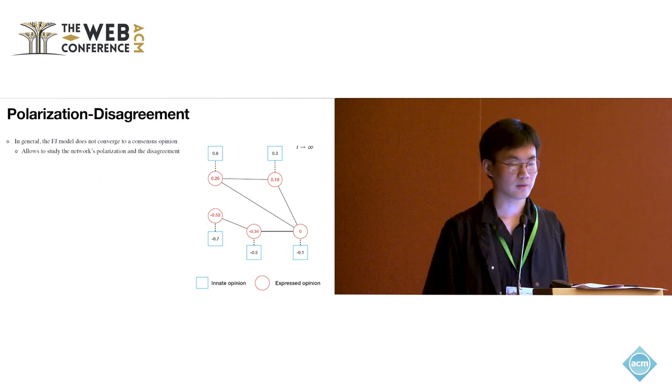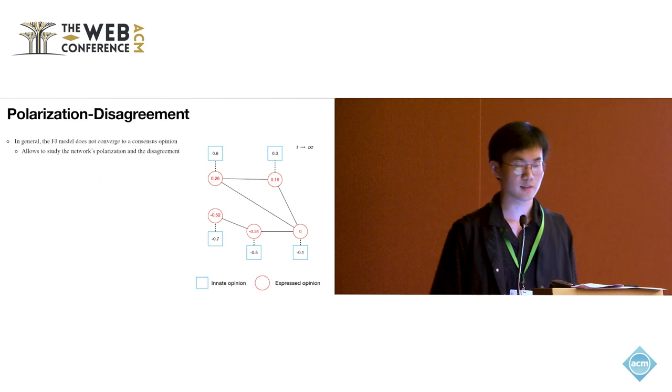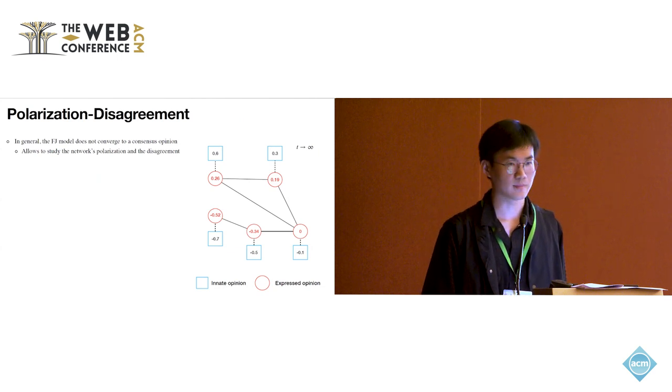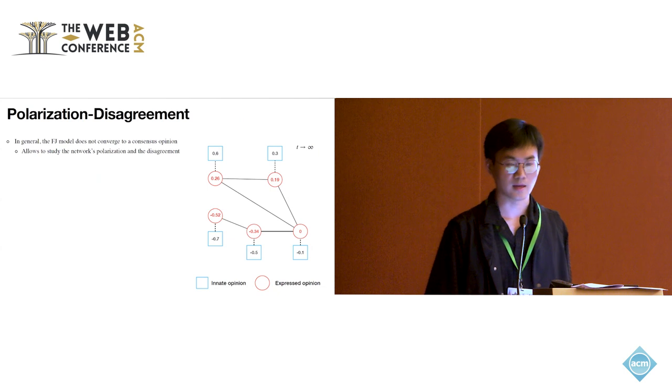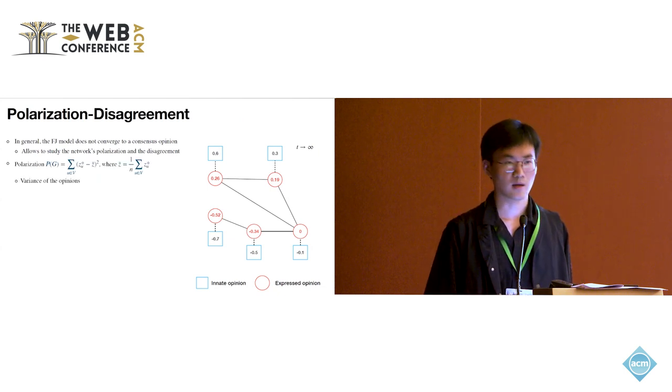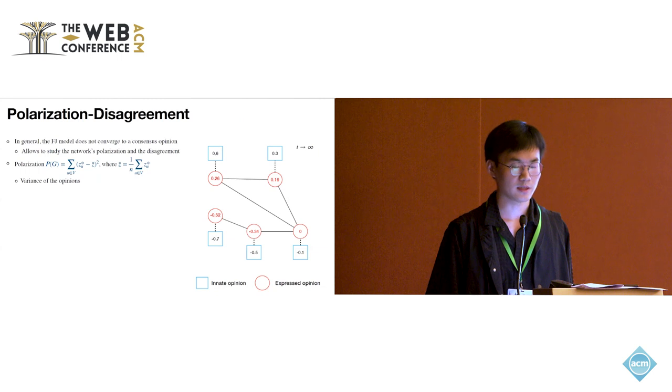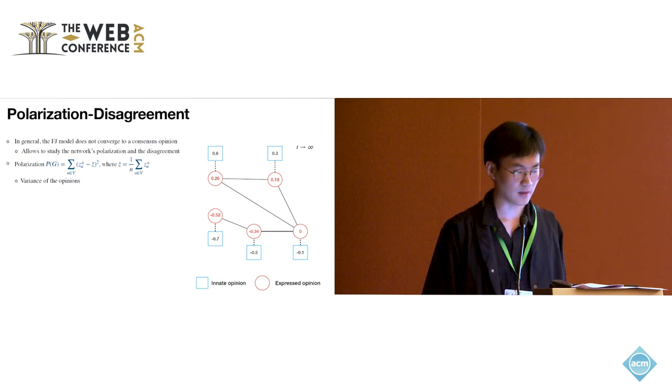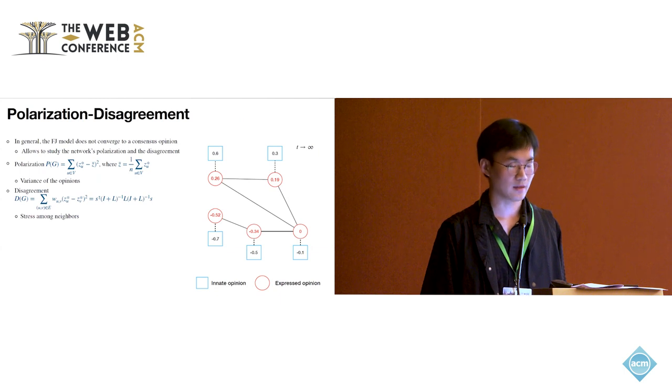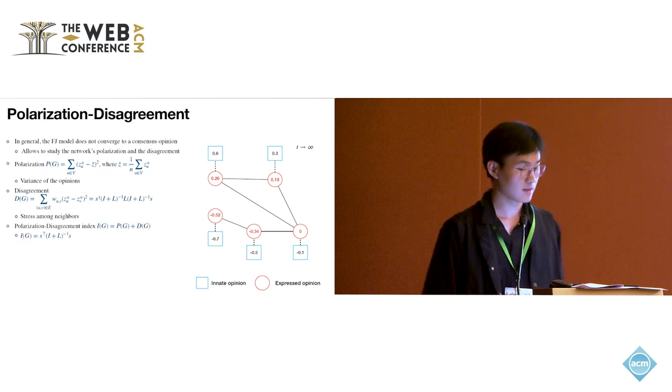In general, the FJ model does not guarantee convergence to consensus opinion, but it allows us to study the polarization and disagreement. Intuitively, we could define the polarization as the variance of opinions, where z bar is the average opinion. And we could define the disagreement DG as the strength among all pairs of neighbors.